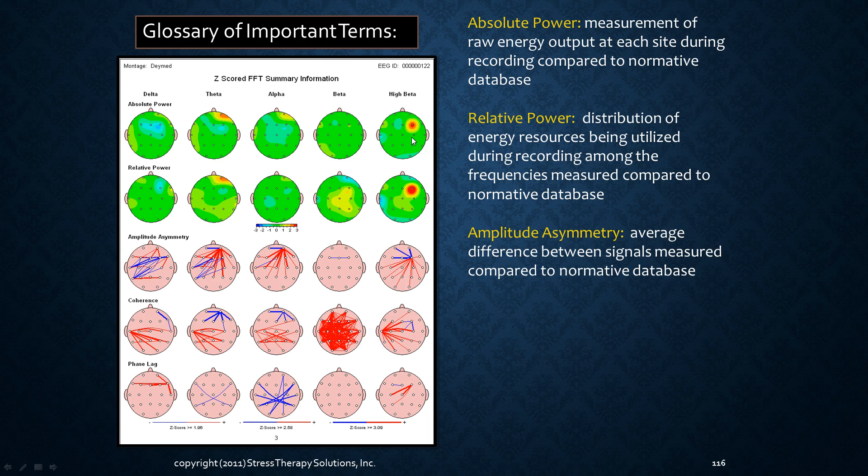When we look at amplitude asymmetry, it tells us the average difference between signals measured compared to a normative database. So it's giving us information about communication from one part of the brain to another. At this time, this is not directional. So the thing that we can mostly conclude from this is that the brain has got some inefficient patterns of communication going on that could be trained to create more efficient communication.